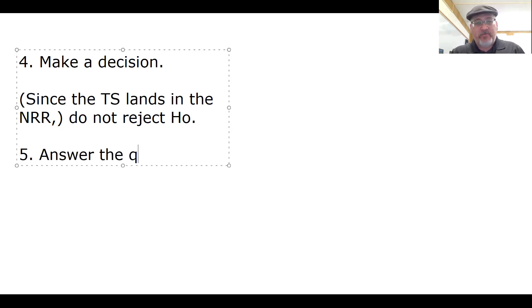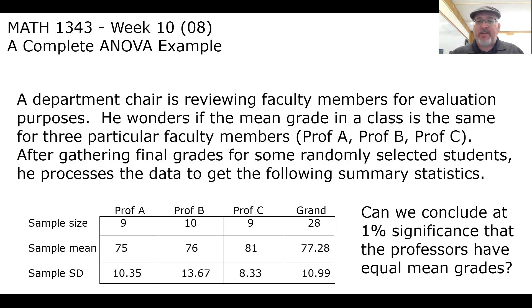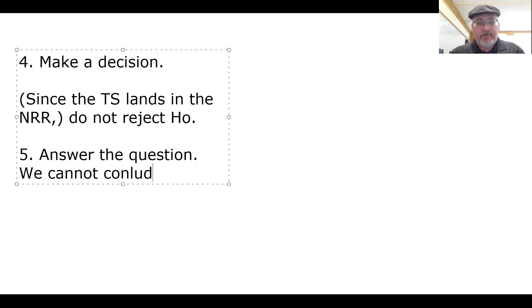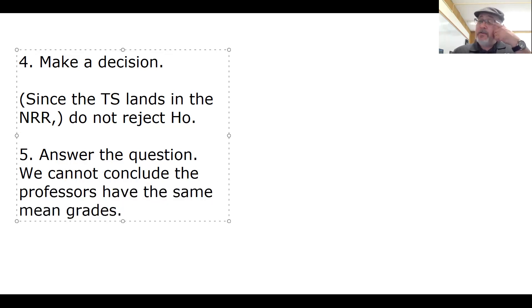And the last thing is to answer the question. Can we conclude that the professors have equal mean grades? We cannot conclude professors have the same mean grades. The means from the samples were different, but they were not too different according to the variability. So an ANOVA test is just a hypothesis test. It runs the same course, whether you do the critical value approach or p-value approach. The new aspect is the F-distribution and the lengthy steps for calculating the test statistic, aka the ANOVA table.